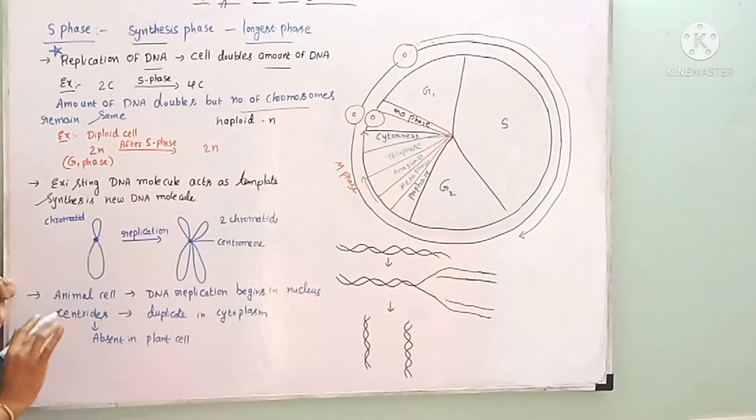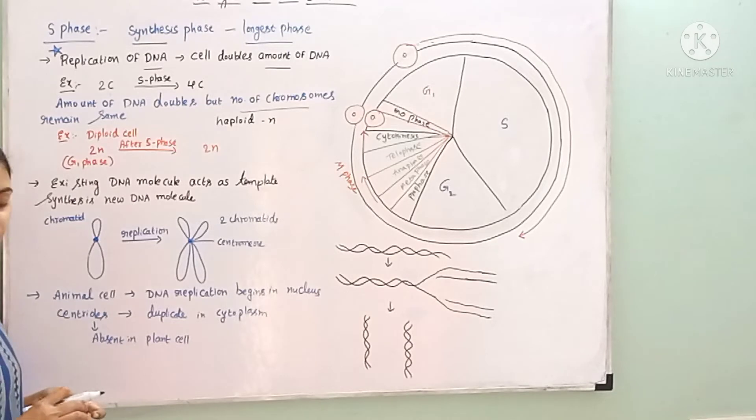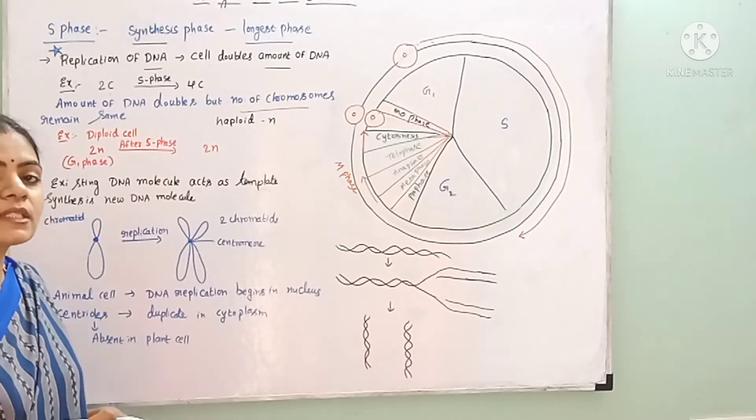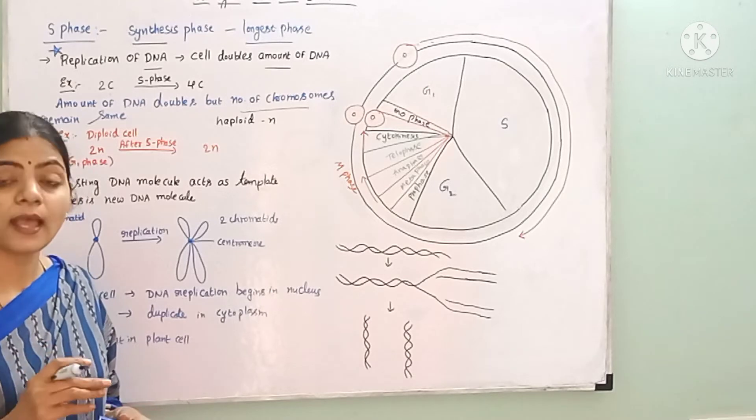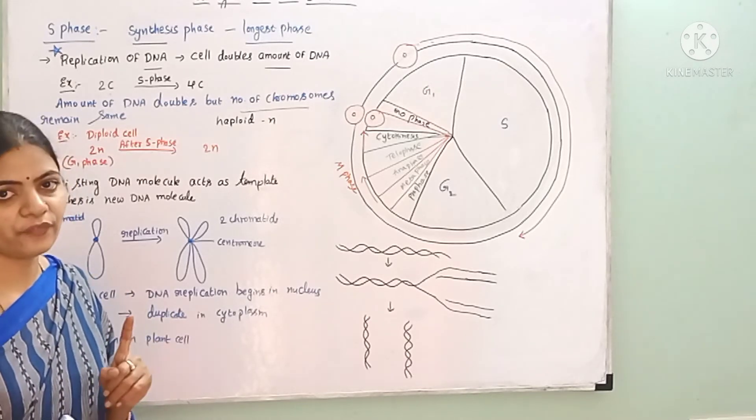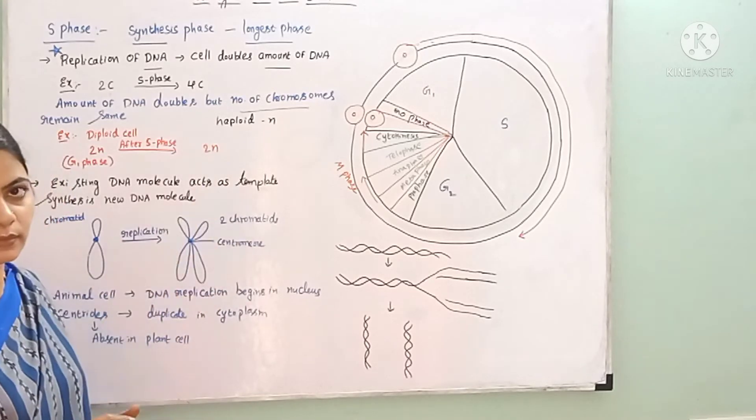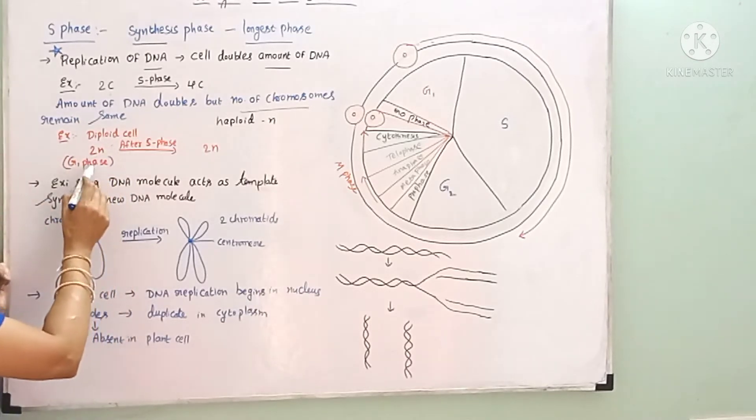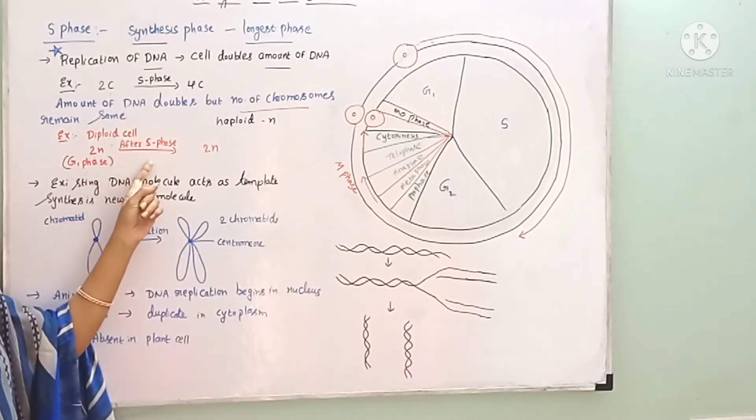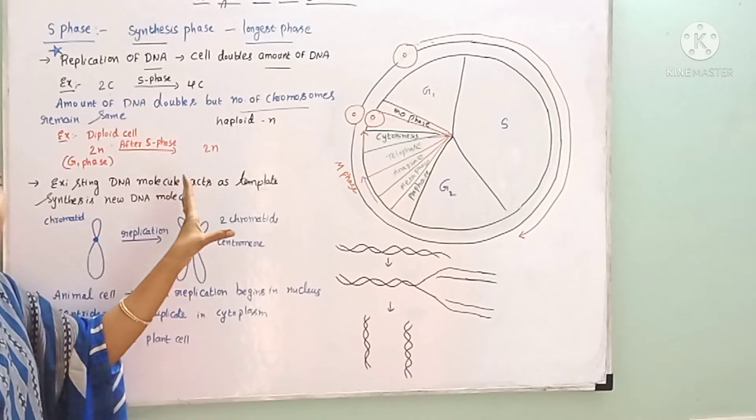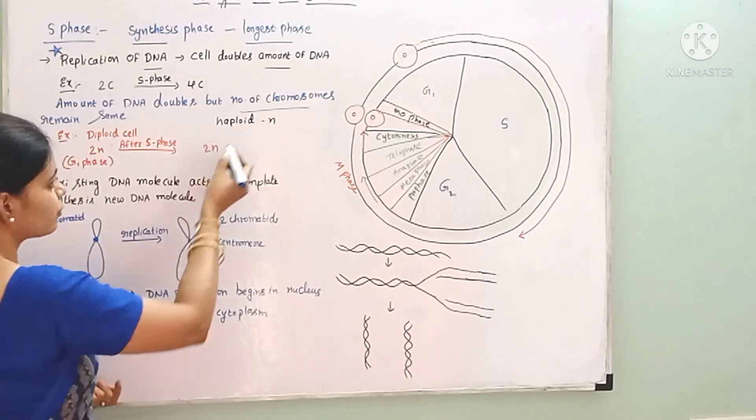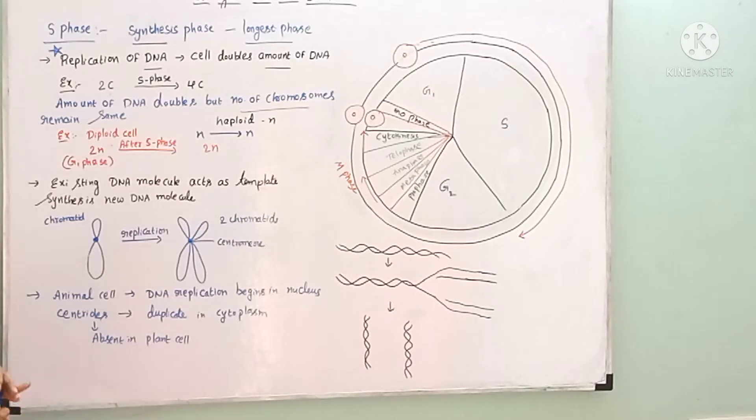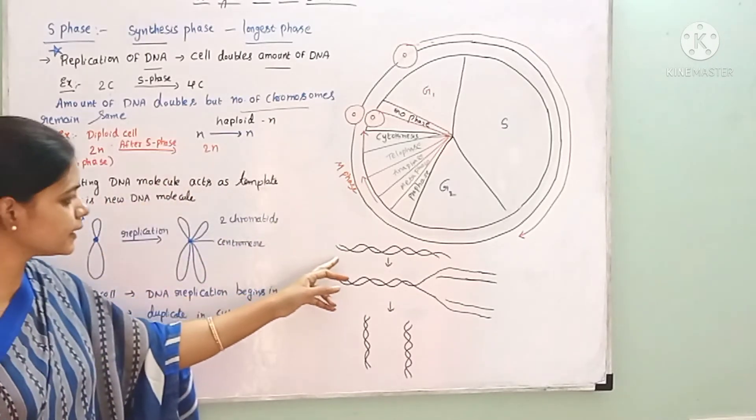For example, in a diploid cell, there are two sets of chromosomes. Diploid cell is denoted by 2n. Initially in G1 phase there are 2n chromosomes. After S phase, there are still 2n chromosomes. In haploid cells with n chromosomes, after S phase it remains n chromosomes.